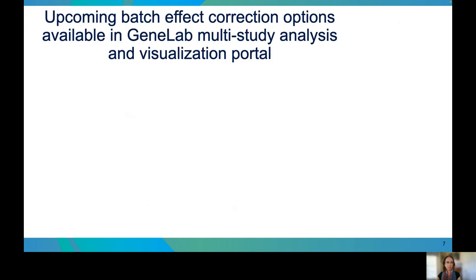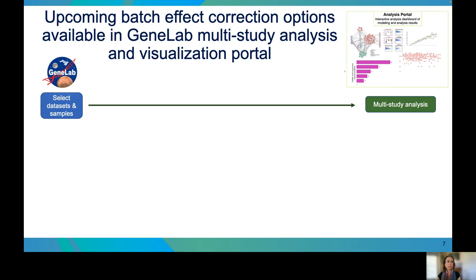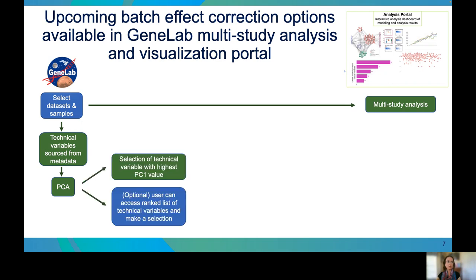This batch effect correction pipeline will be publicly available to users in GeneLab's upcoming multi-study analysis and visualization portal. Users will be able to select datasets and samples, and if they wish to bypass the correction and go straight to multi-study analysis, that's possible. Otherwise, users can evaluate the presence of batch effects using PCA, and manually select the variable or variables for correction, or the variable with the highest principal component 1 value will be automatically selected.